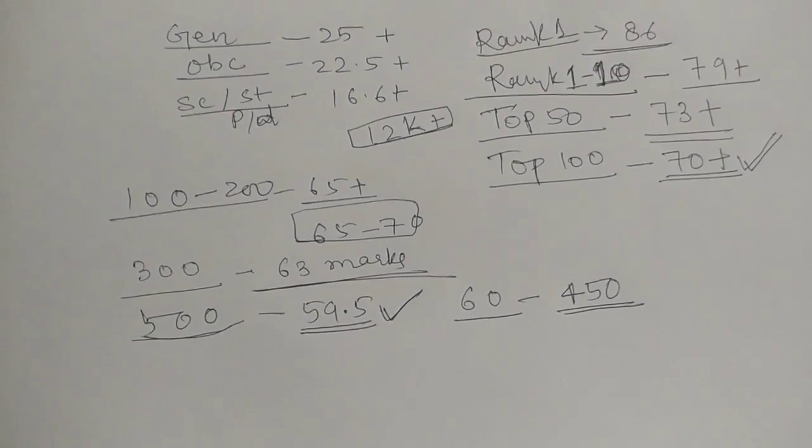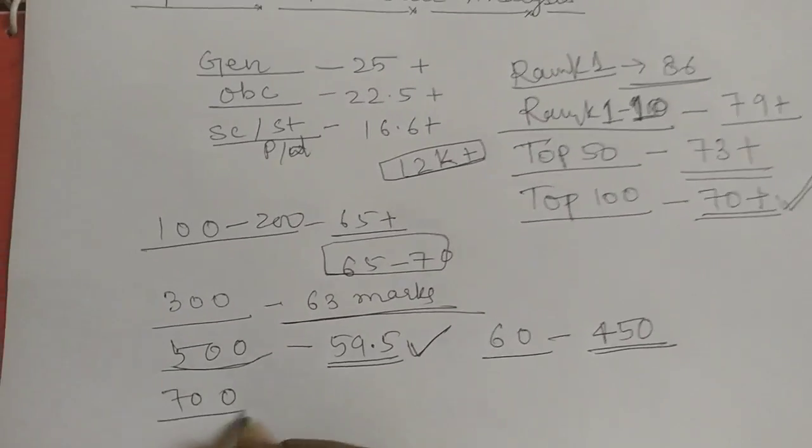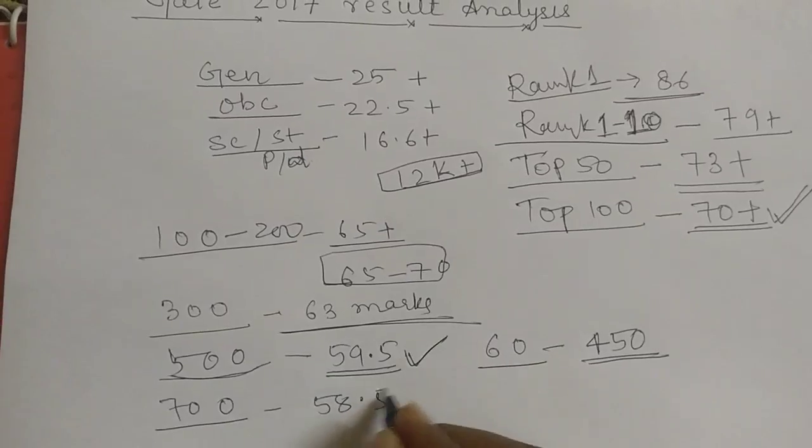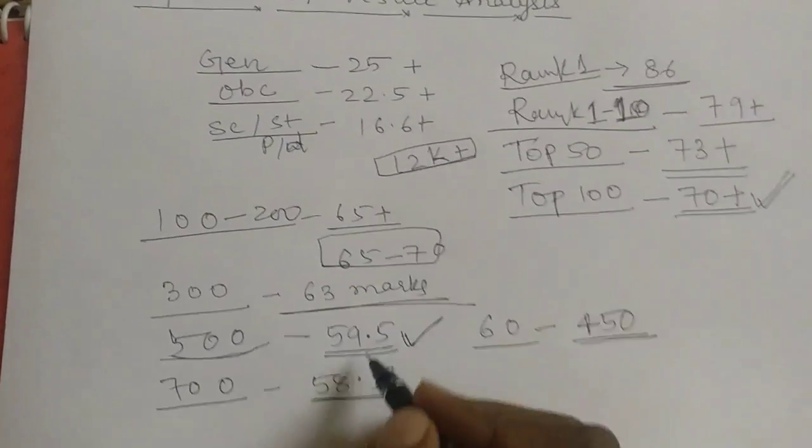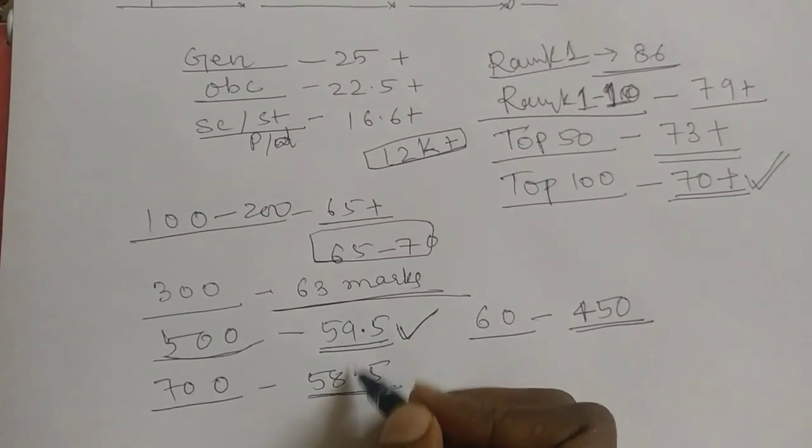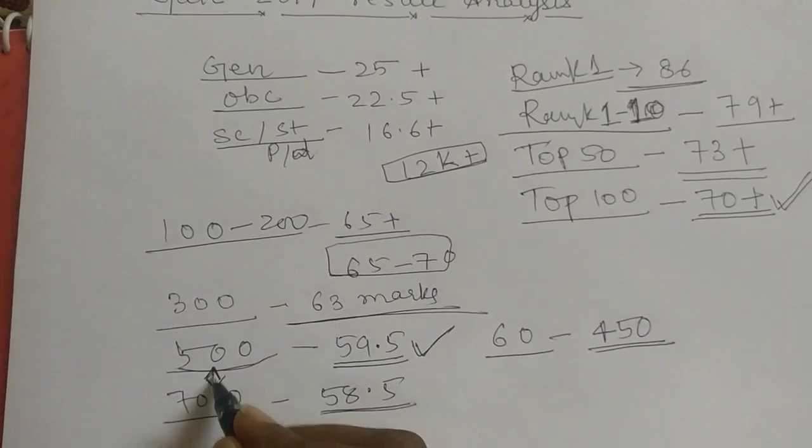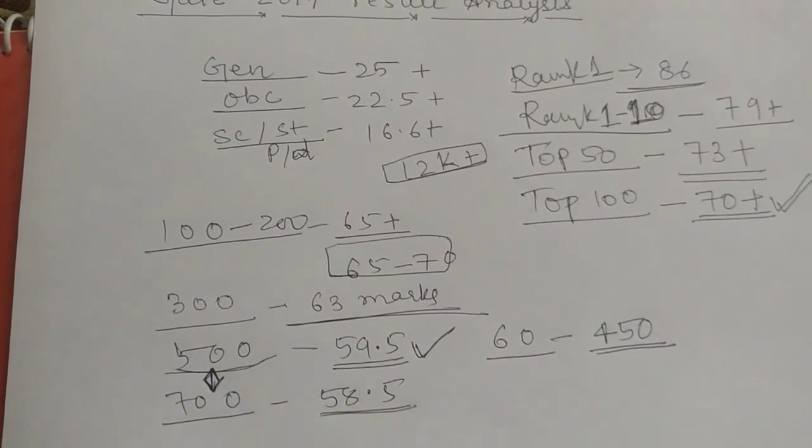Similarly, to get 700 rank, this year 58.5 marks. You can see the competition. Within one marks, the rank difference is 200. So, you can feel how competitive GATE is going to be in next year.